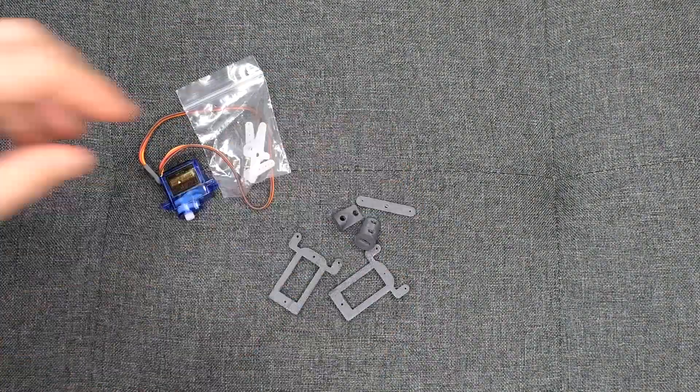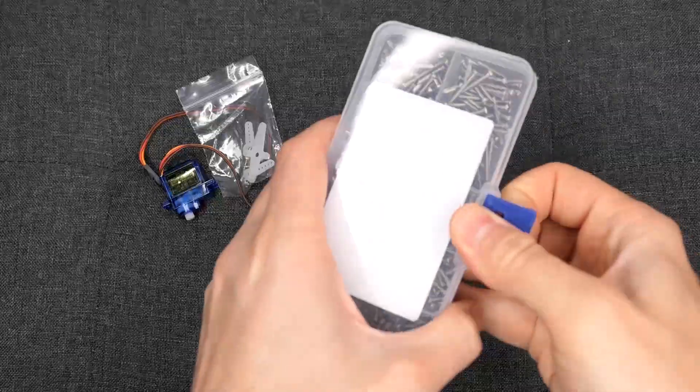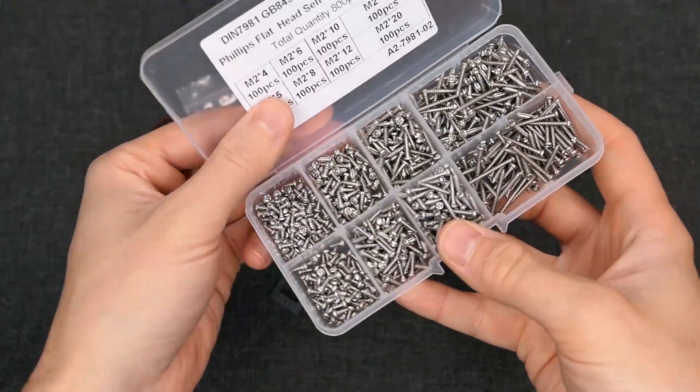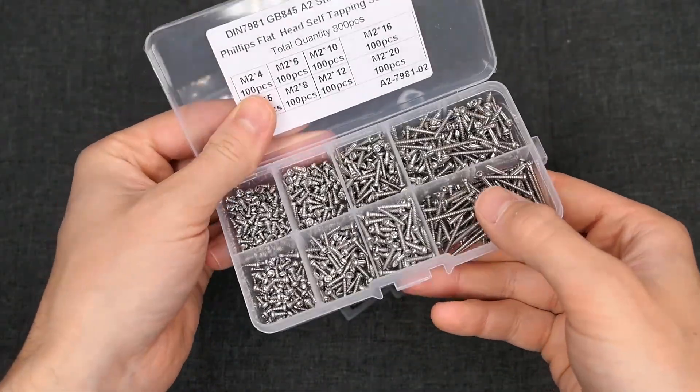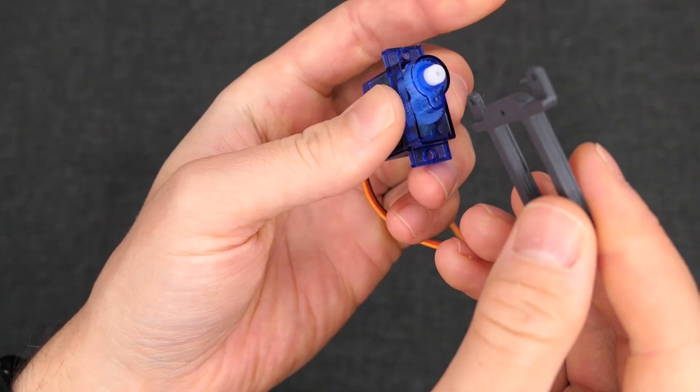To begin with the eyes, gather up the parts required. One SG90 servo, five 3D printed parts, two eyes and various length M2 screws. You will also need an LED. Links to all the parts are in the description.